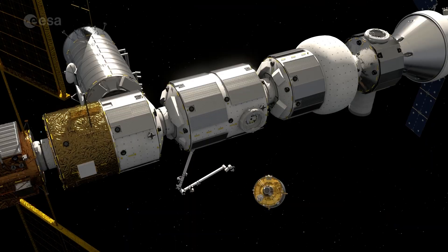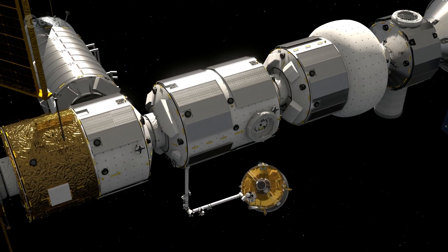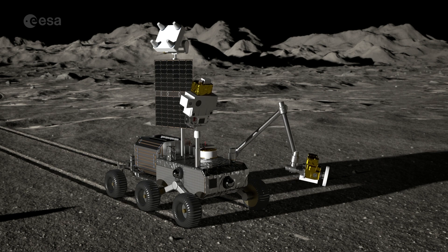ESA is currently working with the Canadian and Japanese space agencies on robotic missions to the moon. These missions will use autonomous rovers with robotic arms to collect samples from the lunar surface.